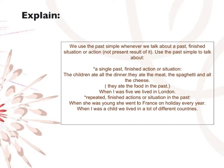Use the past simple to talk about a single past finished action or situation. For example: 'The children ate all the dinner — they ate the meat, the spaghetti, and the cheese.' They ate the food in the past. Another example: 'When I was five, we lived in London.'